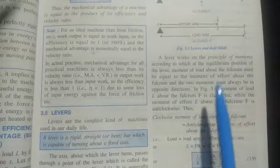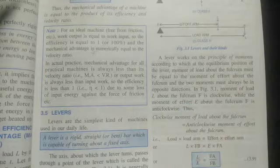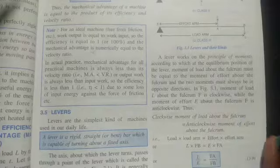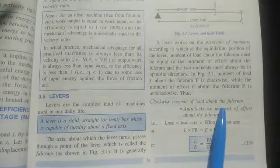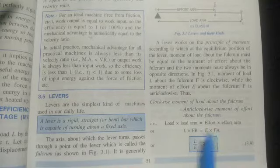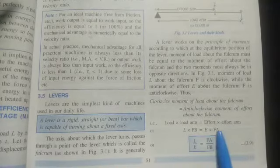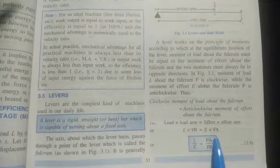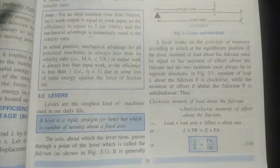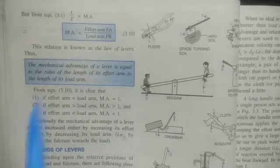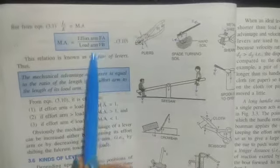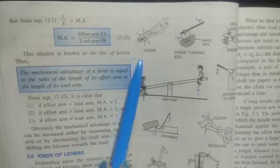An effort E applied at point A of the lever overcomes a load L at point B. From the fulcrum, the distance FA to point A is called the effort arm, and the distance FB of point B is called the load arm. For an ideal lever, the rod is weightless and there is no friction at the fulcrum. A lever works on the principle of moments: at equilibrium, moment of load about the fulcrum equals moment of effort about the fulcrum, and the two moments must be in opposite directions. Thus: L × FB = E × FA, so L/E = FA/FB, meaning MA = effort arm FA / load arm FB. This is known as the law of levers.